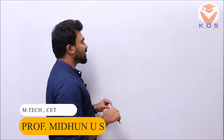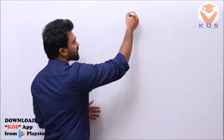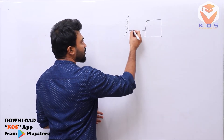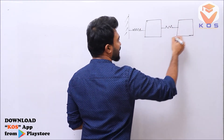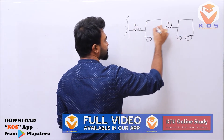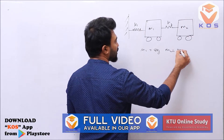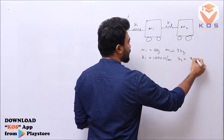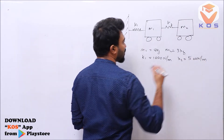Let's solve one problem. I need you to answer this question about the characteristic equation. We have m1 = 8 kg, m2 = 3 kg, k1 = 1000 N/m, and k2 = 500 N/m. We will solve this question.